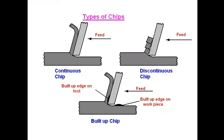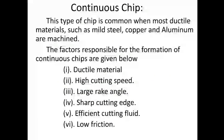Types of chips are: continuous chip, discontinuous chip, and built-up chip. Continuous chip — this type of chip is common when most ductile materials such as mild steel, copper, and aluminium are machined. The factors responsible for the formation of continuous chips are: ductile material, high cutting speed, large rake angle, sharp cutting edge.